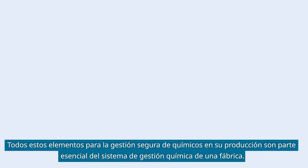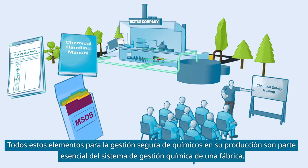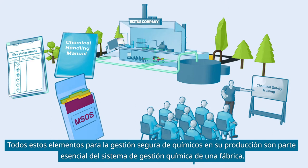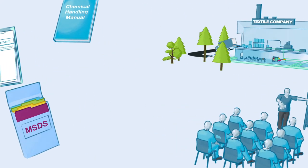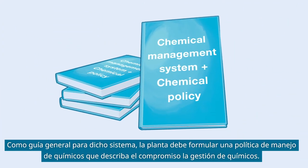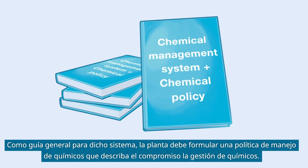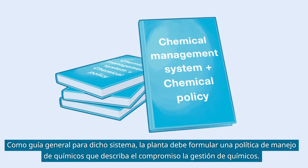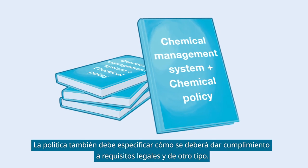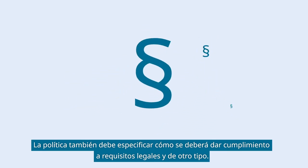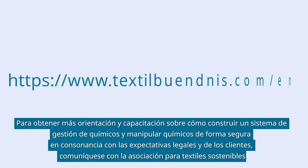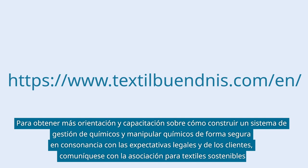All these elements for safely managing chemicals in production form essential parts of the chemical management system of a factory. As an overall guidance for such a system, the factory should formulate a chemical policy that outlines the factory's commitment to chemical management. The policy should also specify how compliance with legal and other requirements is to be achieved. For further guidance and training on how to set up a chemical management system and safely handle chemicals in line with legal and customer expectations, contact the Partnership for Sustainable Textiles.